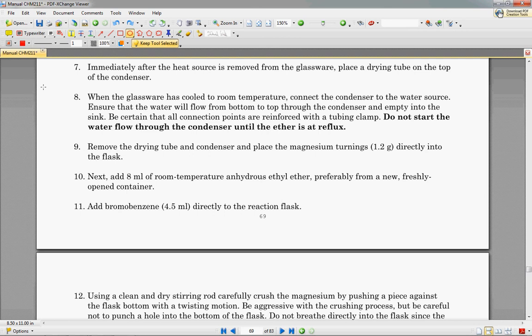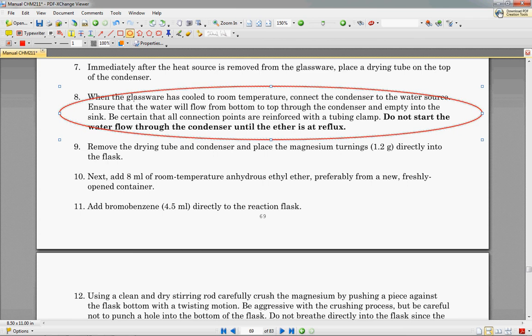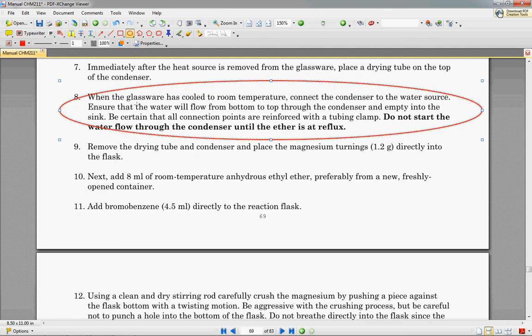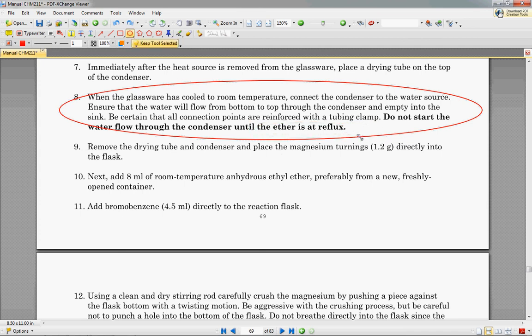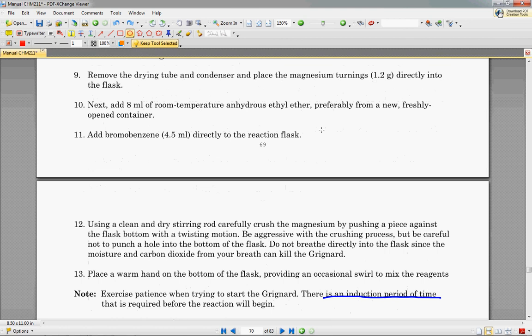Immediately after the heat source is removed from the glassware, place the drying tube on top of the condenser. We're going to need some sort of cooling in order to make the reaction not get too vigorous, not to make sure the boiling doesn't get too vigorous. So when the glassware has cooled to room temperature, connect the condenser to the water source, but do not start the water flow through the condenser until the ether is at reflux, which means once it starts boiling, then you can turn on your condenser. Don't turn it on before then because it will cool your reactor vessel and your reaction will probably not start.